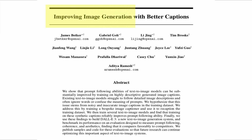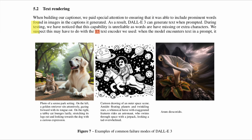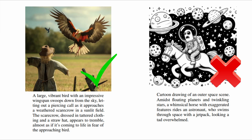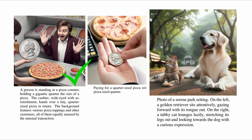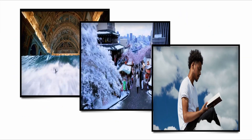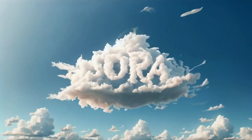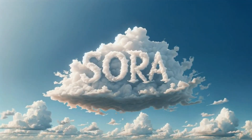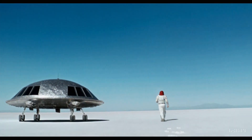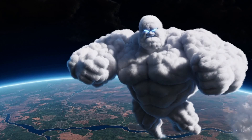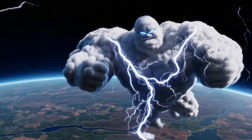In the DALL-E 3 article, the authors mentioned that it might be caused by the T5 text encoder that maps whole words to letters in an image, so when the words have missing or extra characters this would cause issues. If you've watched this far, you're still waiting to know why the name is Sora. OpenAI decided to name it after the Japanese word for sky to signify its limitless creative potential.